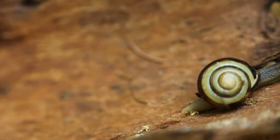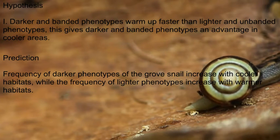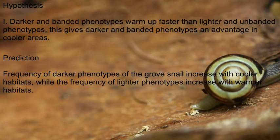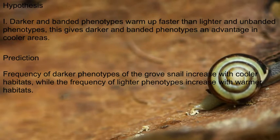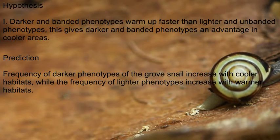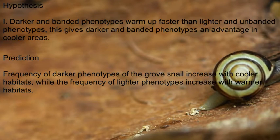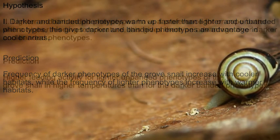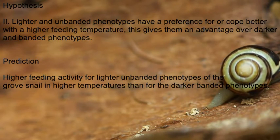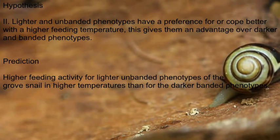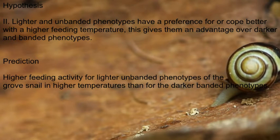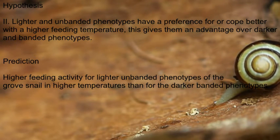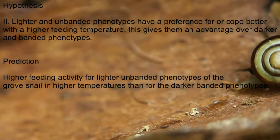We set up the following hypotheses. First, darker and banded phenotypes warm up faster than lighter and unbanded phenotypes, giving the dark and banded phenotype an advantage in cooler areas. We predict that the frequency of darker phenotypes increases with cooler habitats, while the frequency of lighter phenotypes increases with warmer habitats. Second, lighter and unbanded phenotypes have a preference for higher feeding temperature, giving them an advantage over dark and banded phenotypes in warmer areas. We predict higher feeding activity for lighter unbanded phenotypes at higher temperatures than for darker banded phenotypes.